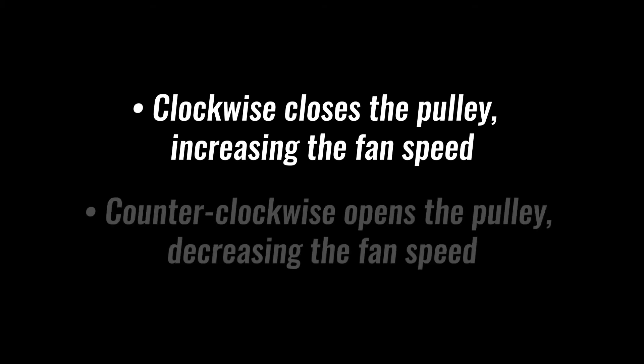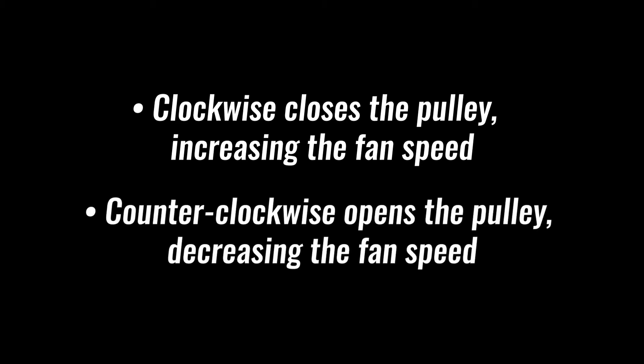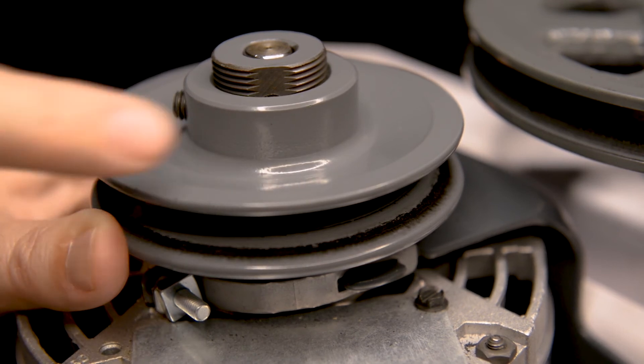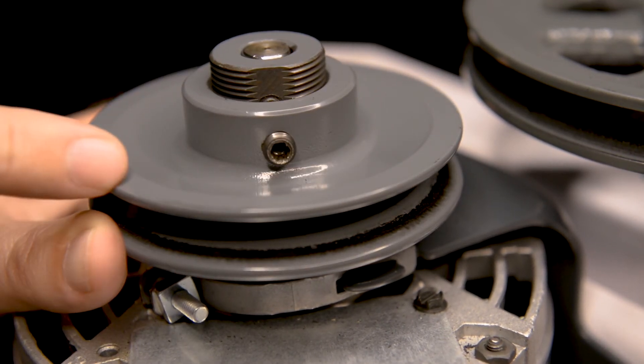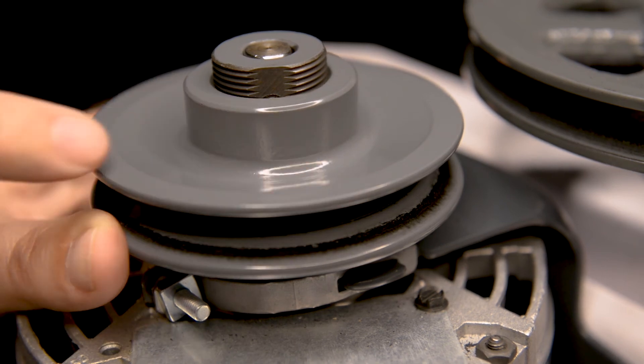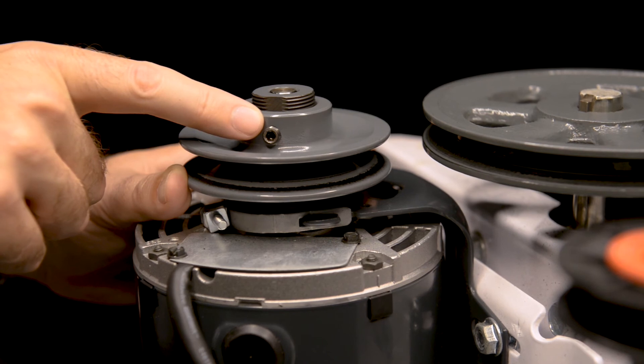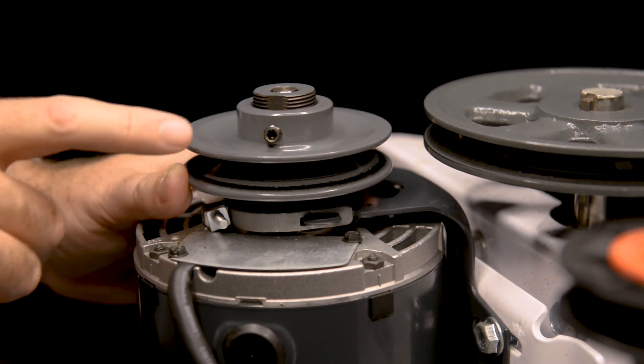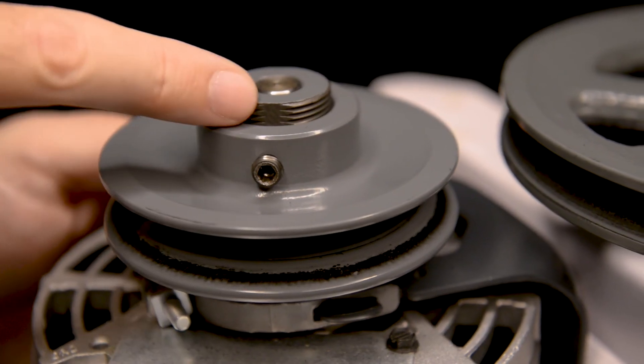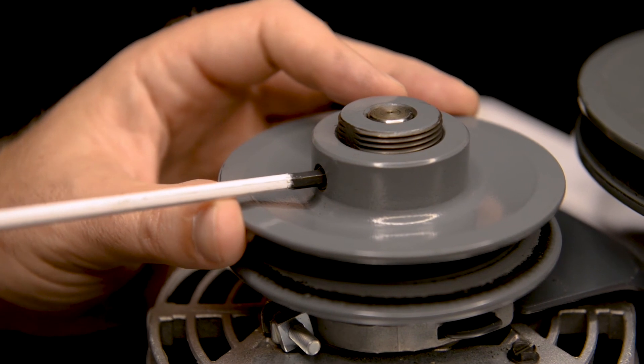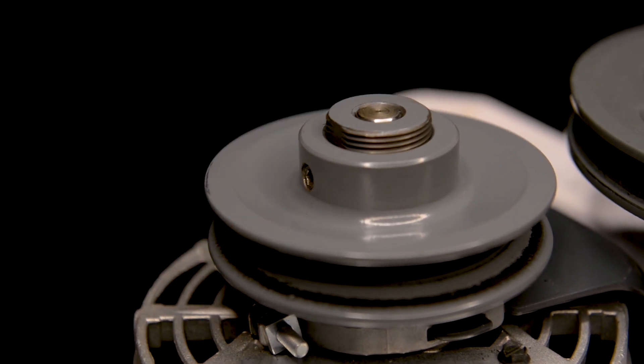Turning the pulley clockwise closes the pulley, increasing its effective diameter and increasing the fan speed. Turning the pulley counterclockwise opens the pulley, decreasing the effective diameter and decreasing the fan speed. When setting the pulley, always turn the pulley clockwise until it's fully closed. From that point, turn it counterclockwise the appropriate number of turns to attain the proper speed. This setting is commonly referred to as the number of turns open. Once the desired setting is achieved, make sure the set screw lines up with the flat spot where there are not threads to interfere with the set screw. Tighten the set screw per manufacturer's recommendations, which can be found in the fan's installation and operation manual.